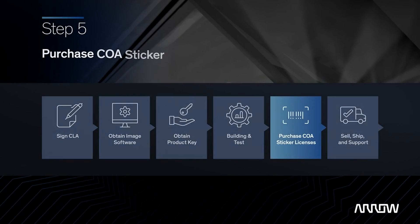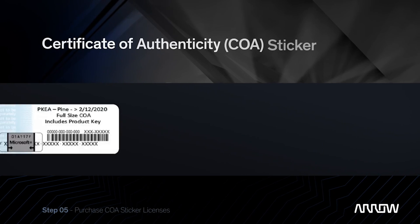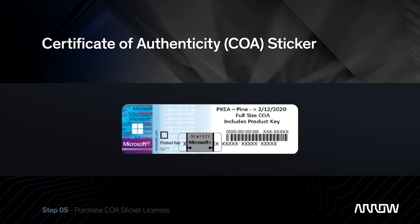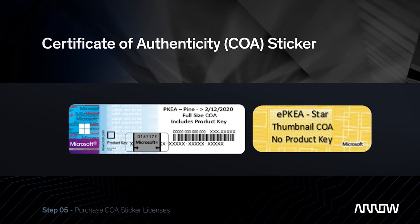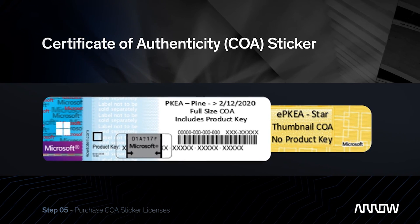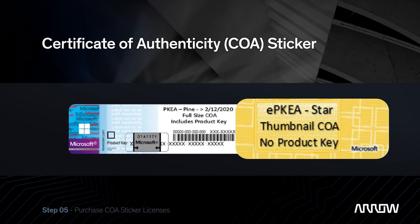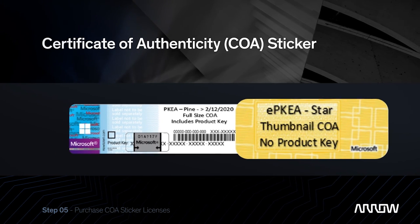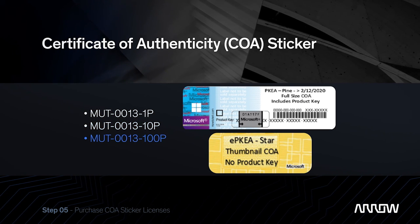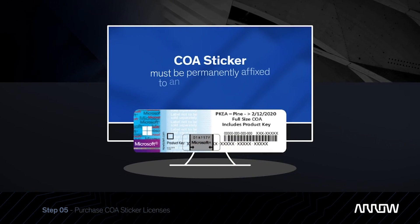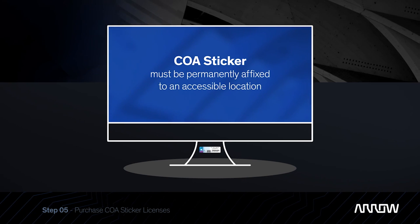Finally, you will need to buy licenses based on your production requirements. The license comes in the form of a physical COA sticker. They come in two categories depending on your OS. The larger COAs have a unique product key printed on each, while the smaller COAs allow for a single key. COA stickers come in packs of 1, 10, or 100. Usually, the COA sticker must be permanently affixed to an accessible location on the device.